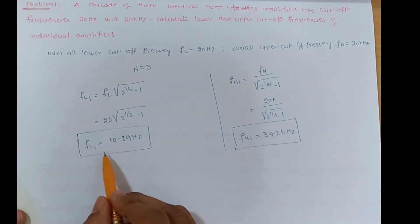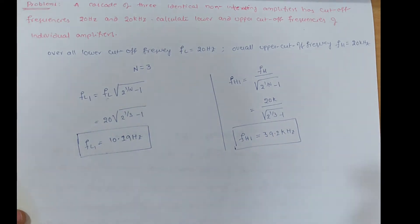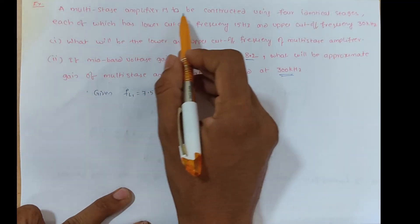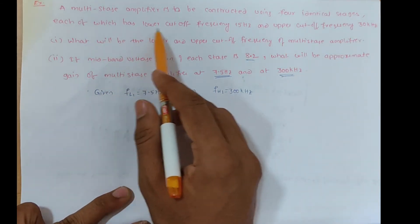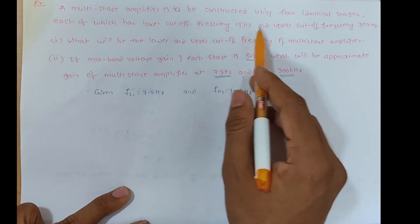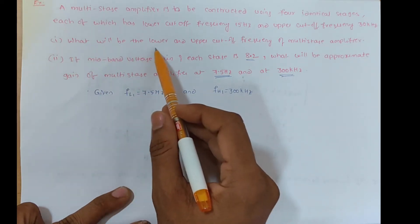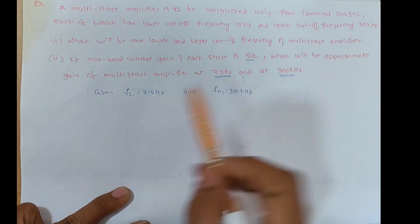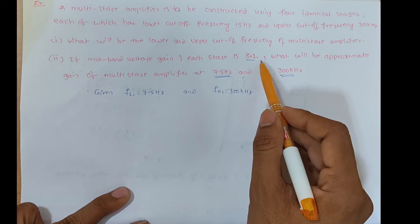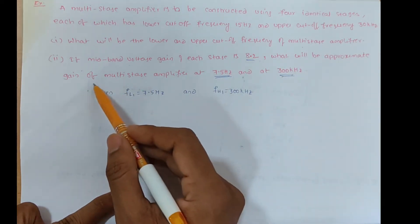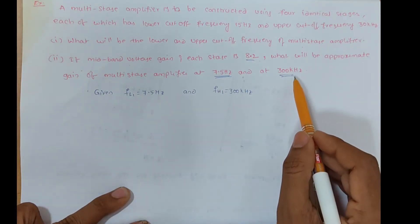These are the individual amplifier lower and upper cutoff frequencies. Next problem: A multistage amplifier is constructed using four identical stages, each having a lower cutoff frequency of 15 Hz and upper cutoff frequency of 30 kHz. Part one: find the lower and upper cutoff frequency of the multistage amplifier. Part two: if the midband voltage gain of each stage is 8.2, find the approximate gain of the multistage amplifier at f = 7.5 Hz and at f = 300 kHz.